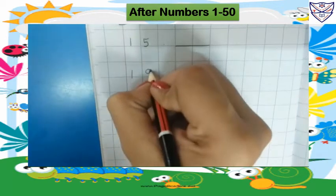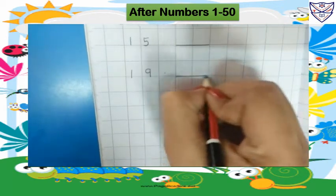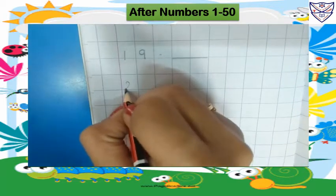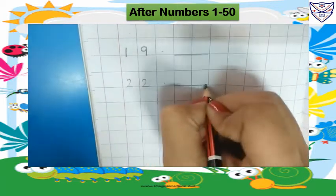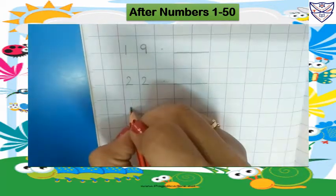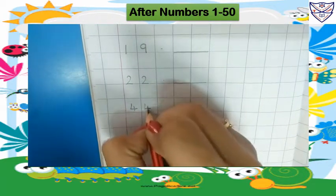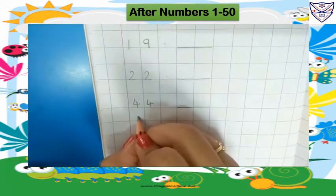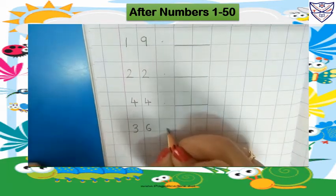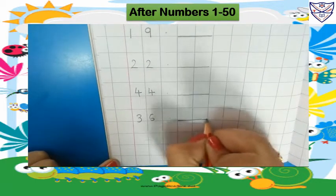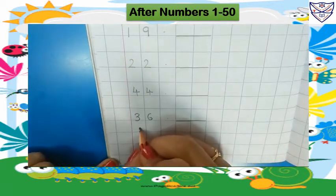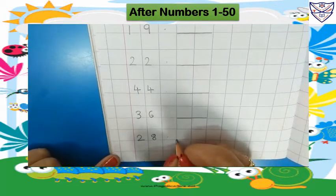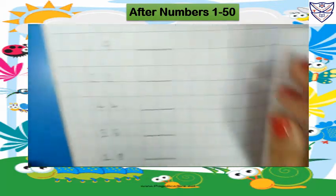Write here 19, leave one box, put here a small dash, leave one line. Write here 22, leave one box, put here a small dash, leave one line. Write here 44, leave one box, put here a small dash, leave one line. Write here 36, leave one box, put here a small dash, leave one line. Write here 28, leave one box, put here a small dash. Next page.